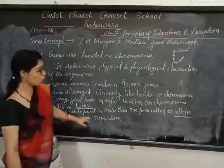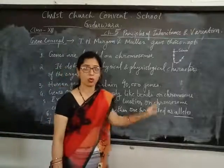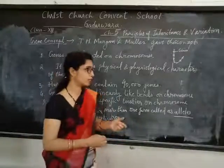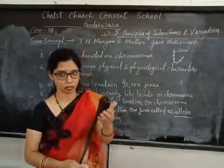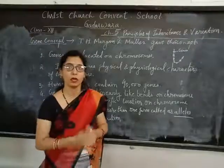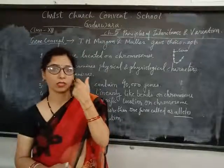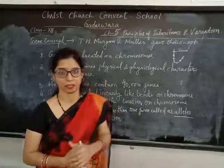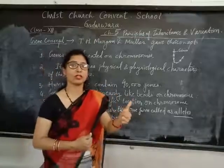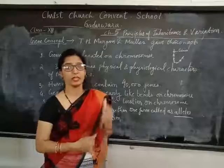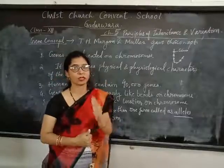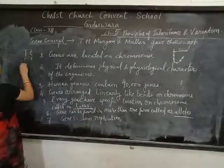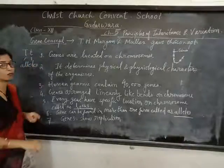And a gene can be found in more than one form - every gene can be found in multiple forms. So, capital T and small t - you have already studied about Mendel's law, where the pea plant experiment was done. The character taken was tallness. Capital T shows tallness or the dominant character, and small t shows the recessive character. So capital T and small t are what? These are the alleles - two different forms of one gene.